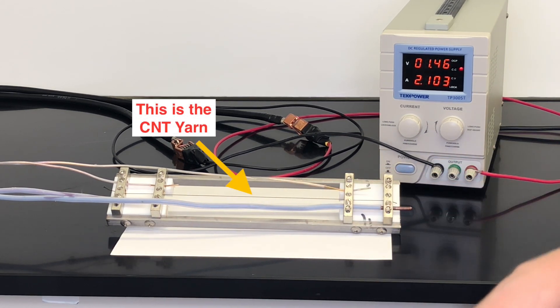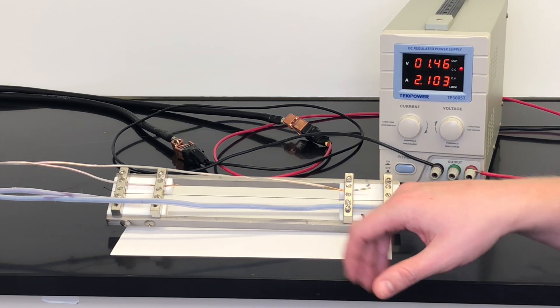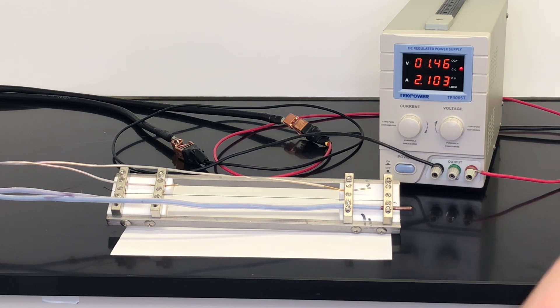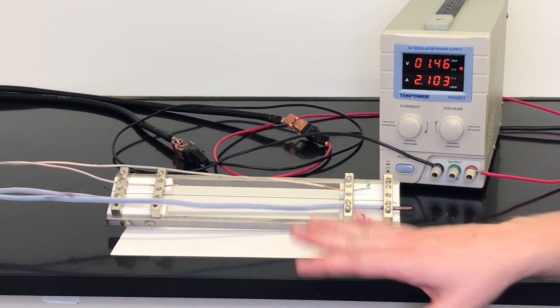Here we have a sample of that same 500 micrometer carbon nanotube yarn, this time without the insulation, hooked up to a DC power supply with about 20 centimeters of yarn suspended in air between these inner steel contacts.